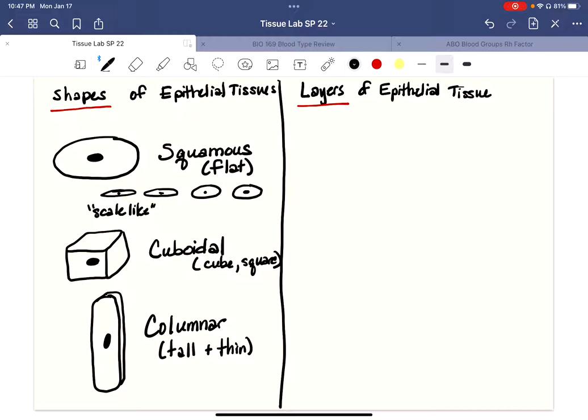And all of these are sitting on a basement membrane, every one of them. Okay, let's look at the layers of epithelial tissue that are also used to categorize. So we're going to use our shapes and we're just going to put them in different layers.